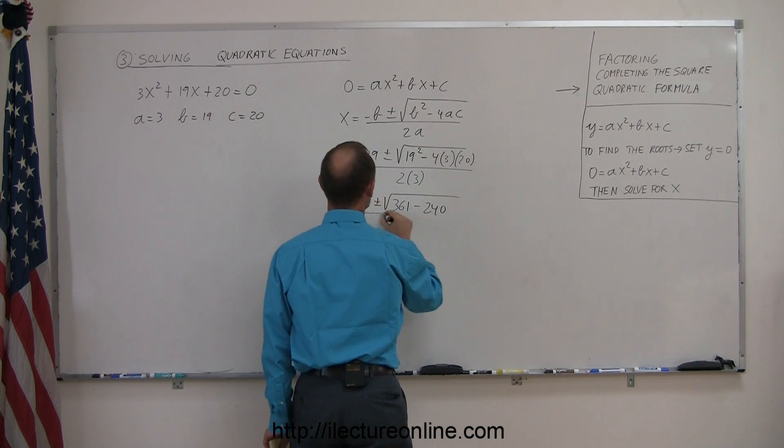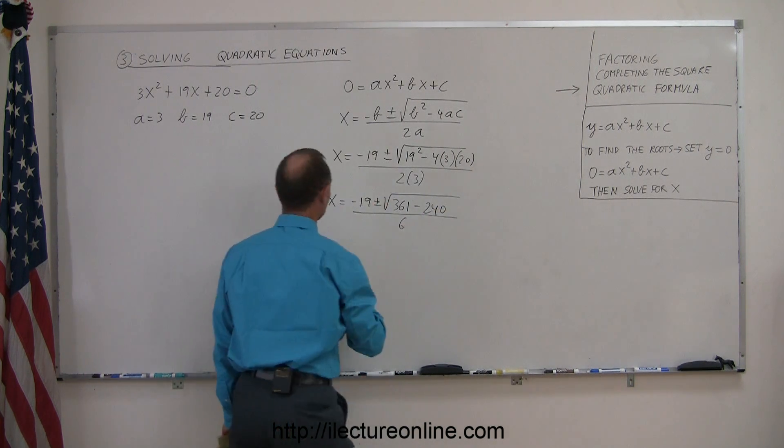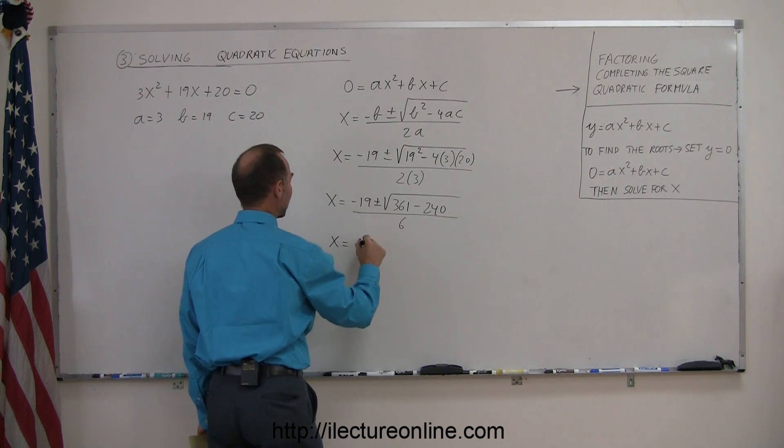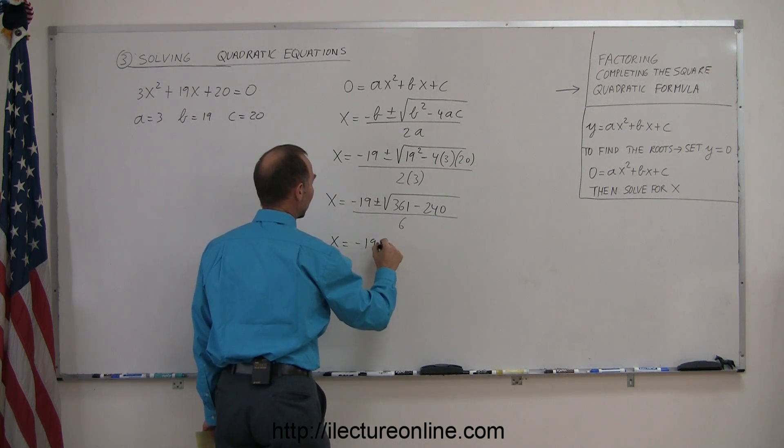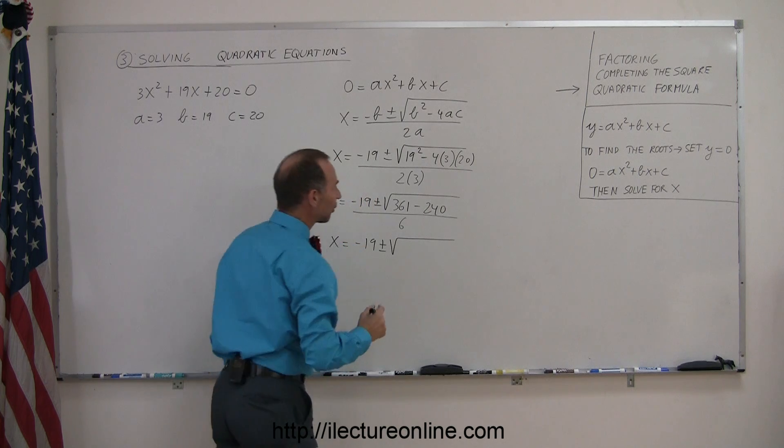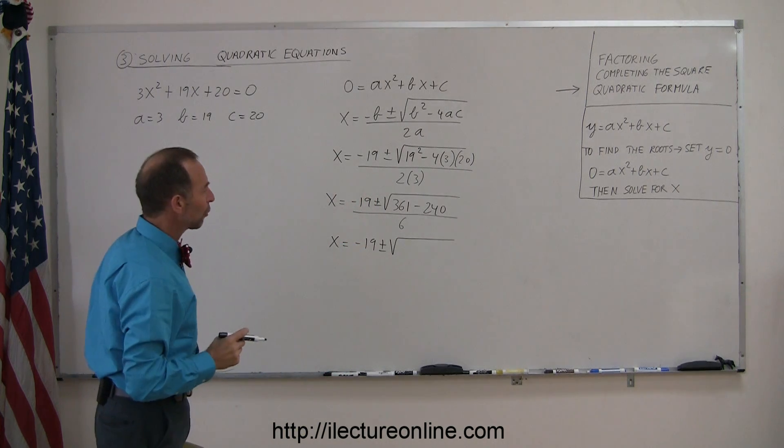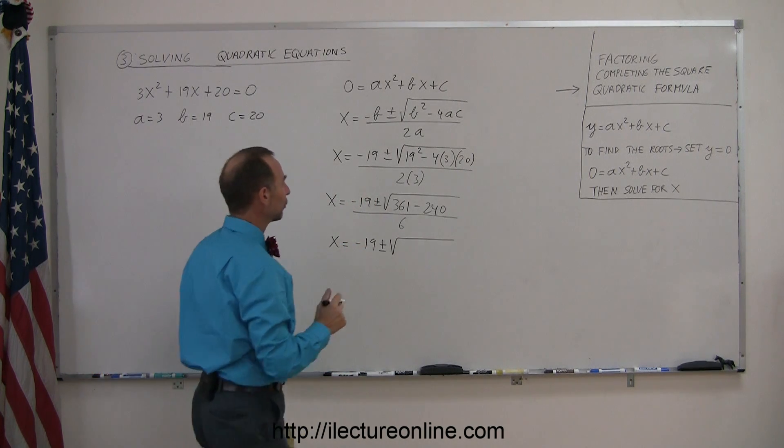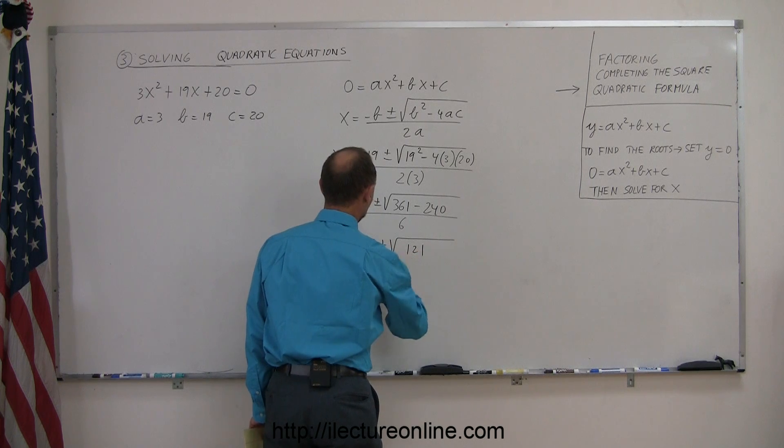And the whole thing divided by 6. x, continuing to simplify this, is minus 19, plus or minus the square root of 361 minus 240, that's 121, divided by 6.